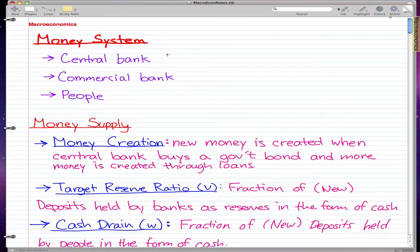They are the central bank, the commercial banks, and people. So the central bank—I'm a Canadian, so my central bank is the Bank of Canada. But for those living in the US, the central bank would be the Federal Reserve, or we could call it the Fed.